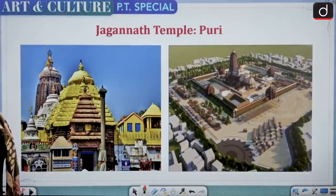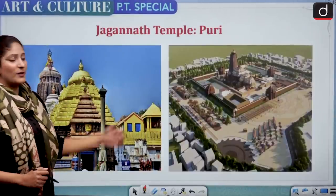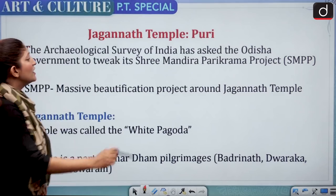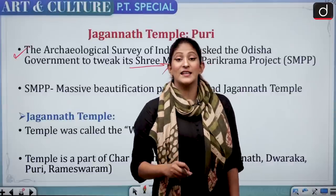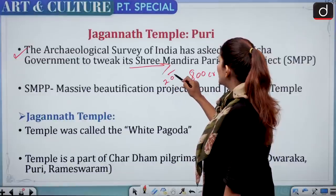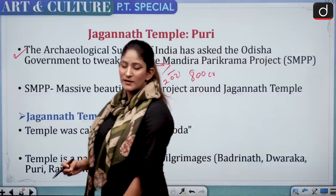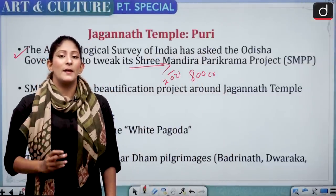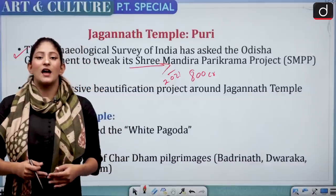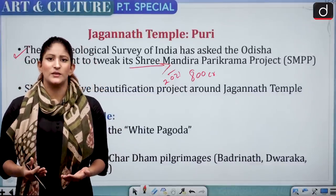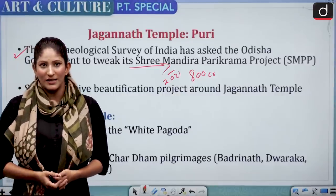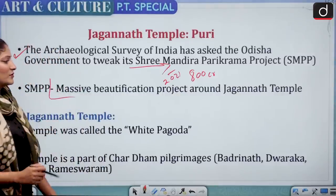Moving to the Jagannath Temple of Puri — it is in the news because the Archaeological Survey of India has asked the Odisha government to tweak its Shri Mandira Parikrama project, an 800-crore rupees project taken up in 2021. The project aims to build a 75-meter circumambulatory path around the outer walls of the Jagannath Puri Temple so that devotees get an unobstructed view and amenities along the path.